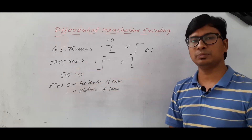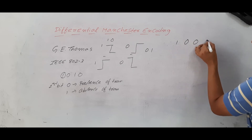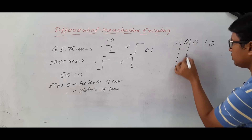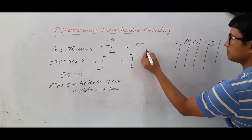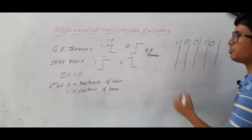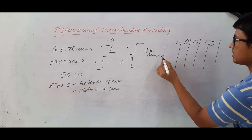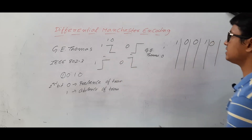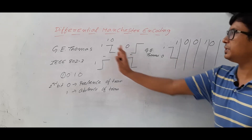Let us take that I want to represent 10010. We have to represent each bit in two bits. In J.E. Thomas, the first bit is 1. How to represent 1 in J.E. Thomas? It is a Z-shape. So represent like this. The first bit is now completed.